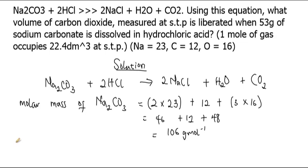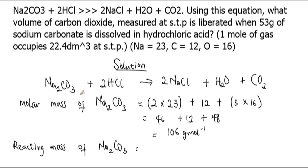Now we calculate the reacting mass. The reacting mass equals the coefficient from the equation multiplied by the molar mass. For sodium carbonate, the coefficient in the equation is one, so the reacting mass is 1 × 106 = 106 grams. This is the first part of the solution — we have determined the reacting mass of sodium carbonate.